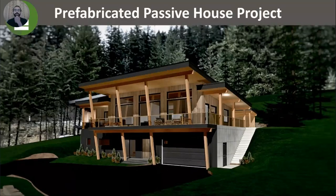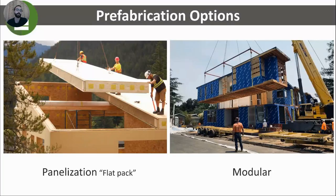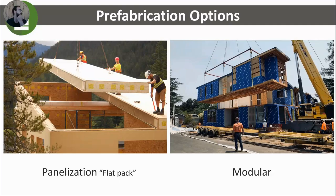The first step is an idea. You have a concept for a house or a building that you want to build, and you're considering prefabrication as your building method. In prefabrication, you'll have two general options: panelization or flat pack prefabrication, and modular prefabrication. Both of those options have advantages and disadvantages. Panelization is what we specialize in at BC Passive House, so the examples you will see in the next couple of minutes are going to be based on that system.